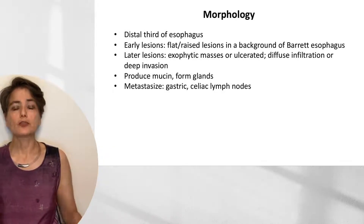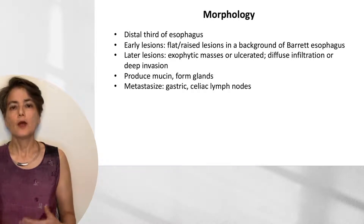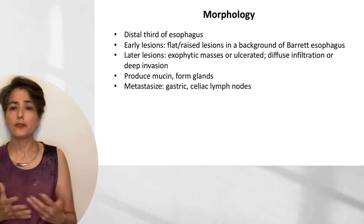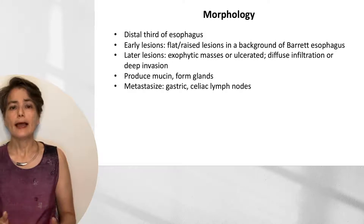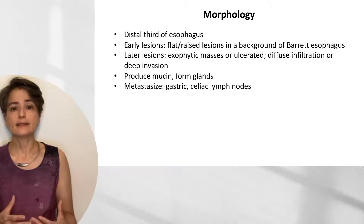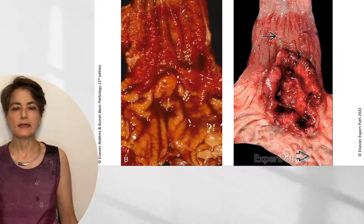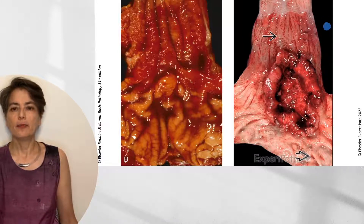Morphologically, because these arise in a background of Barrett esophagus, they're associated with the distal third of the esophagus. Early lesions will be flat or raised, in a background of Barrett esophagus. Later lesions can be exophytic or ulcerated masses, and may show diffuse infiltration or deep invasion. Most produce mucin-forming glands, and because they're in the distal third, they tend to metastasize to the gastric and celiac lymph nodes. Here is an adenocarcinoma that is ulcerated and invading deeply, arising in a background of Barrett esophagus.